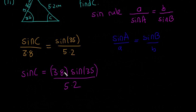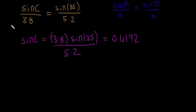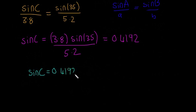That's just a little bit of algebra to manipulate that. You can stick that into your calculator if you want, and you'll get the answer is equal to 0.4192. And now here comes the last step. So we have sine of C is equal to 0.4192.